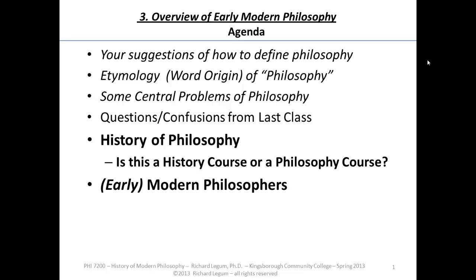I want to spend some time on the early modern philosophers — in particular, who the famous philosophers were that we're going to be considering. Whose work in philosophy do we still remember and think highly of from that period in the 17th and 18th century? And some of the minor figures. In addition, I want to focus on what their positions are, what their answers are to the philosophical questions we've talked about.